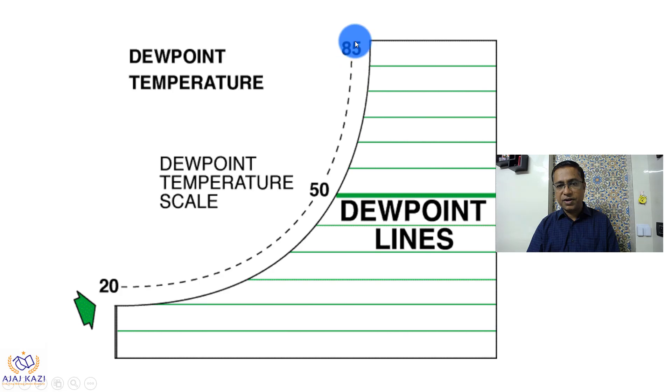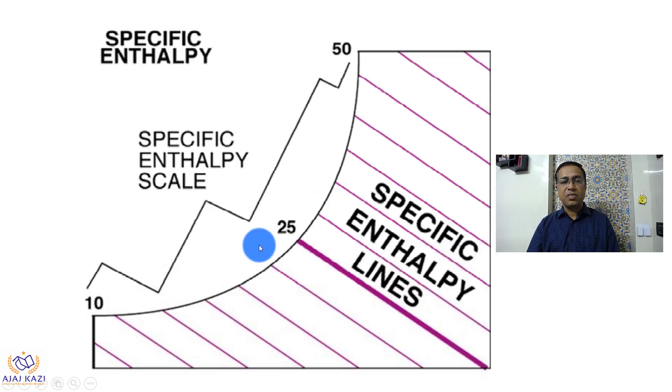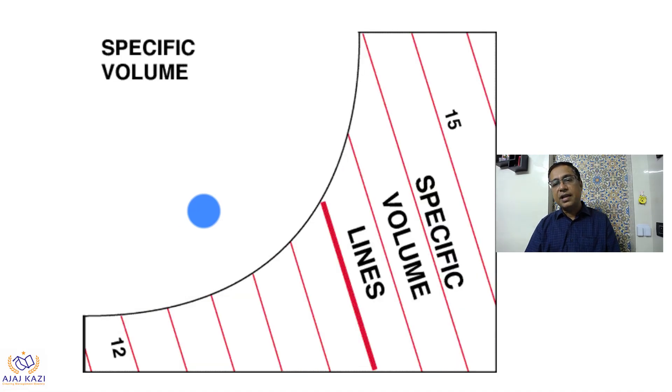The next one is specific enthalpy. You can see the scale over here: 10, 25, 50. These lines hit this scale and give you specific enthalpy. When these lines hit here, you'll get that actual number. Then these are the lines which denote specific volume.